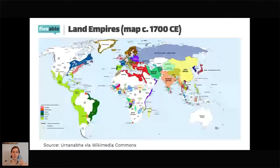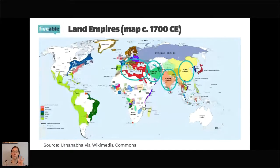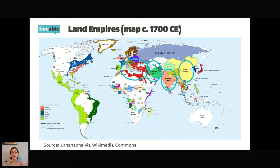Let me show you the ones the College Board specifically references. The Qing Empire in East Asia counts as a land empire. The Mughal Empire in South Asia, the Ottoman Empire in the Middle East, and the Safavid Empire in the Middle East as well — these are the four big land empires that textbooks and the College Board really emphasize. There are others, but those are the big four.